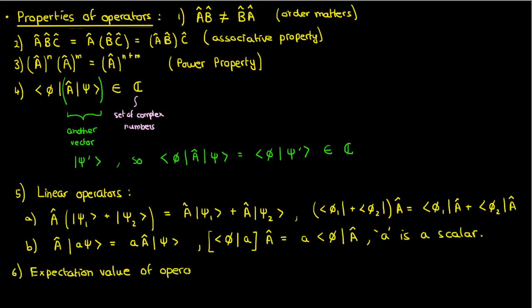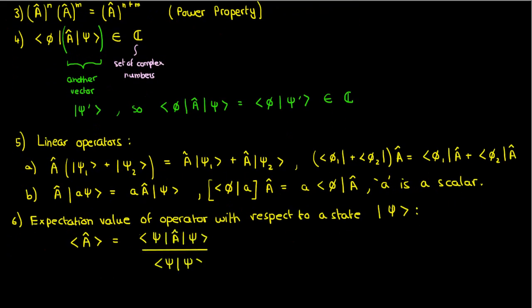The expectation value, or the mean value of an operator with respect to a state psi, is given by the ratio of the following brackets. Now you might wonder how a transformation can have a mean value. I mean, it's a transformation, isn't it? But remember how I mentioned earlier that some operators represent physical observables? That's where the expectation value is significant. For instance, if my A hat is the position operator, then the expectation value of A hat would just give me the mean value of a particle's position.